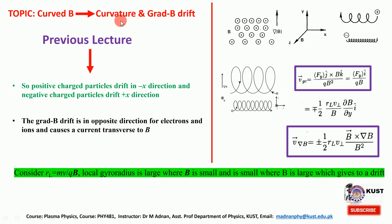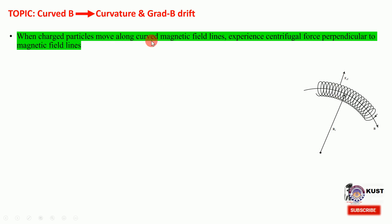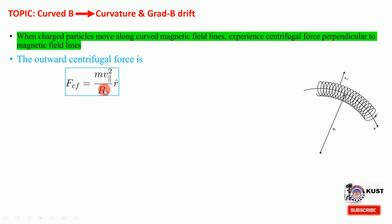We have also previously discussed the curvature drift. When the charged particle is moving along a magnetic field that is curved in geometry, it will experience an outward centrifugal force perpendicular to the magnetic field lines. When the charged particle performs its gyro motion along curved field lines, it experiences a centrifugal force equal to MV² over R, and the parallel velocity contributes to this force.